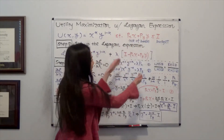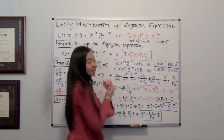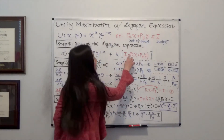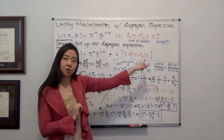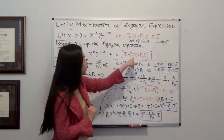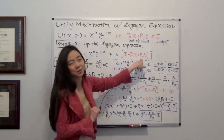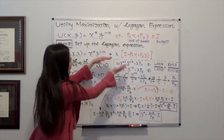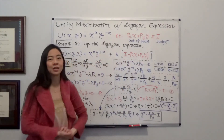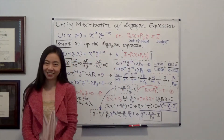So inside the bracket you will see i minus the cost of the bundle, p_x·x plus p_y·y. That's how you set up the Lagrangian expression.